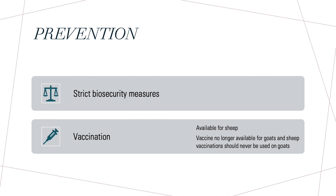It's important to prevent CL because there is currently no known cure for the disease. Strict biosecurity measures should be taken when purchasing new animals into the herd. One thing to note is that there is no longer a vaccine available for goats. In the past, both sheep and goats had vaccines available to prevent CL; however, currently only sheep do. It's also important to note that vaccines for sheep should never be used on goats for safety reasons.